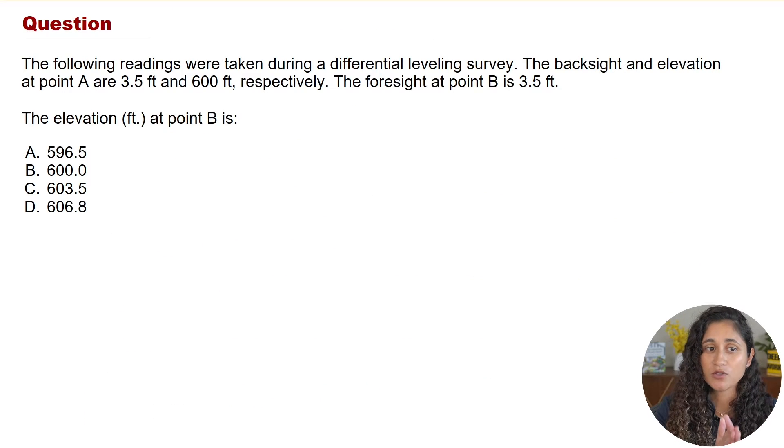So the following readings were taken during a differential leveling survey. We are given the backside and elevation at point A and then the foresight at point B, and we want to determine the elevation at point B.